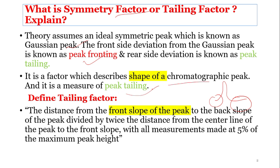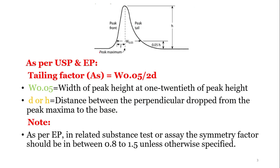The tailing factor is a factor which describes the shape of a chromatographic peak, and it is a measure of peak tailing. The tailing factor is defined as the distance from the front side of the peak to the back side of the peak, divided by twice the distance from the center line of the peak to the front slope, with all measurements made at 5% of the maximum peak height.